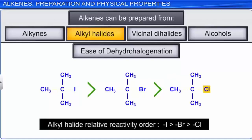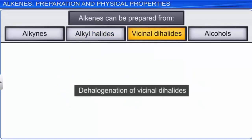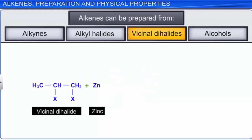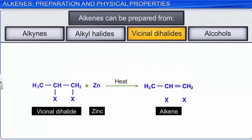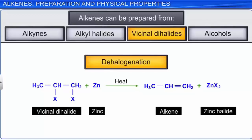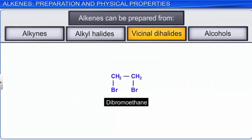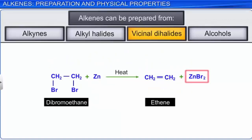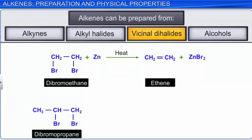Another way to obtain alkenes is by the dehalogenation of vicinal dihalides. In vicinal dihalides, the two halogen atoms are attached to two adjacent carbon atoms. When such dihalides are treated with zinc metal, the zinc atom removes the two halogen atoms simultaneously, forming zinc halide and leaving behind an alkene. This reaction is also called dehalogenation, as zinc removes two halogen atoms simultaneously. For example, when dibromoethane is treated with zinc, it forms ethene and zinc bromide; and when 1,2-dibromopropane is treated with zinc, it forms propene and zinc bromide.